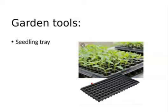If we use this tray for the kitchen garden, we can divide it into the first three lines and add one crop. In the next three lines, we can add another crop. In the following lines, we can add tomatoes, chilies, and seasonal crops.